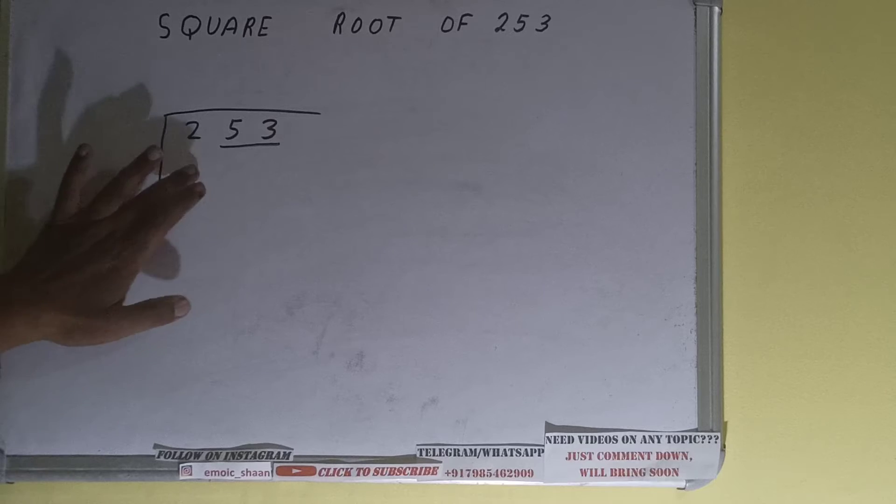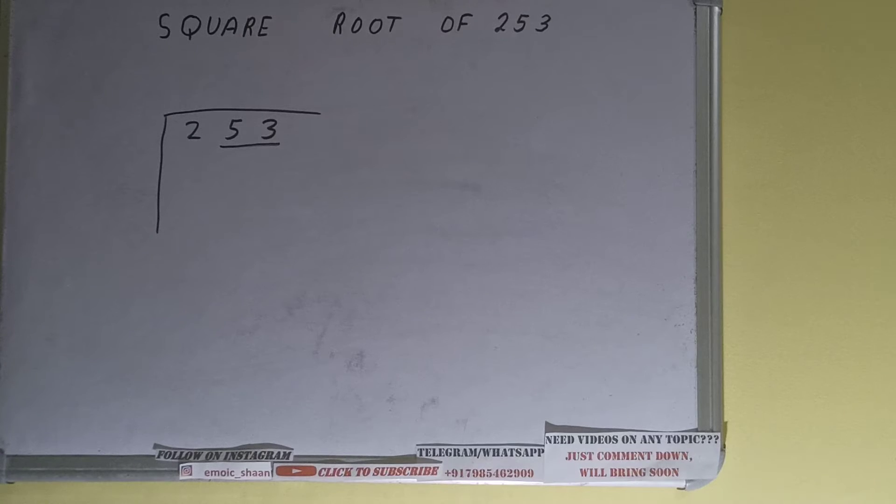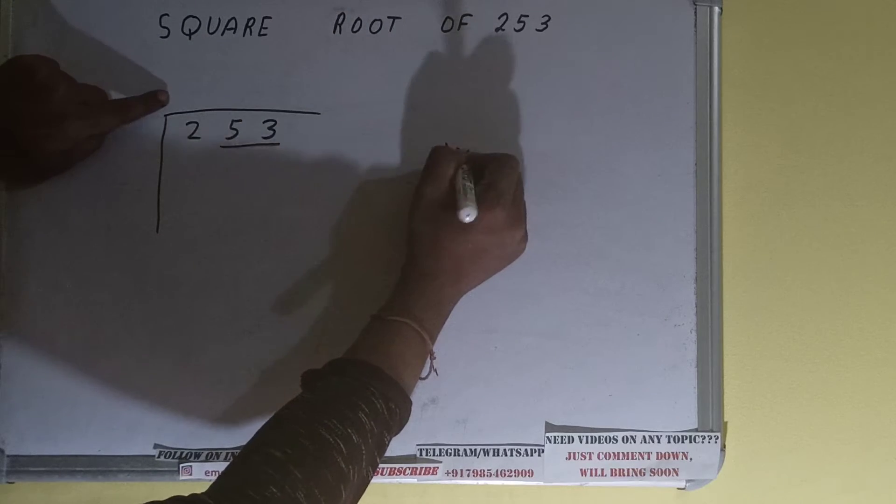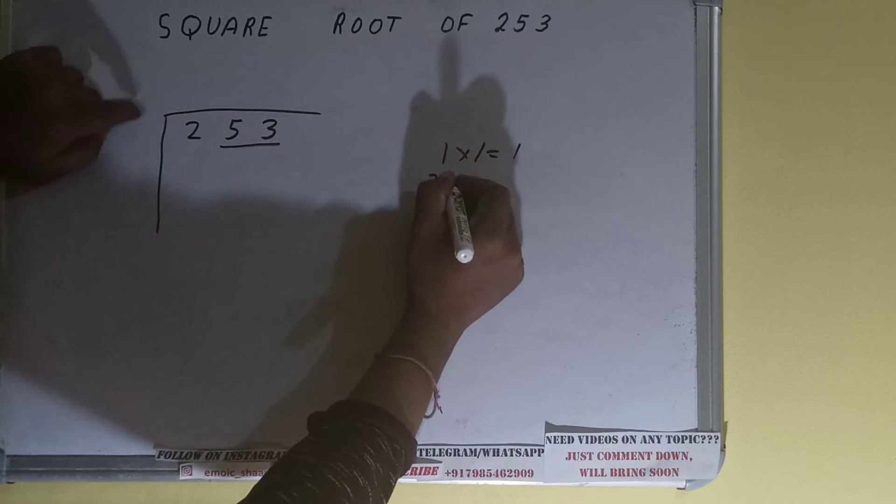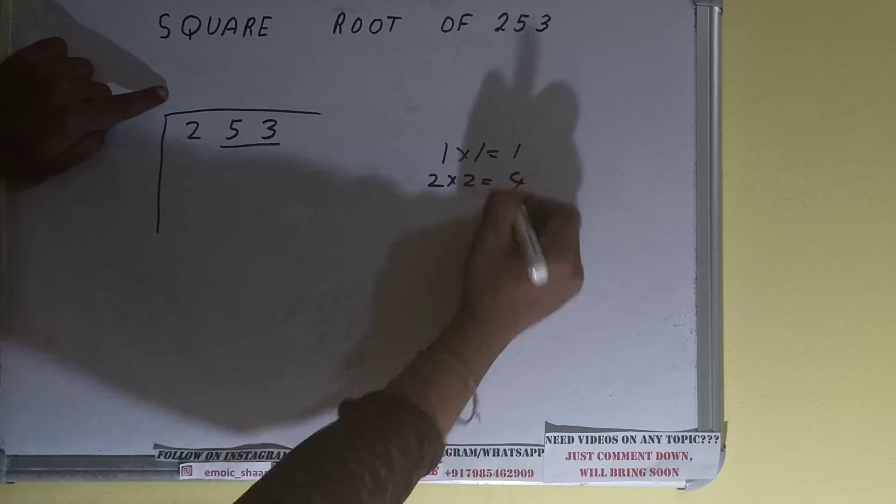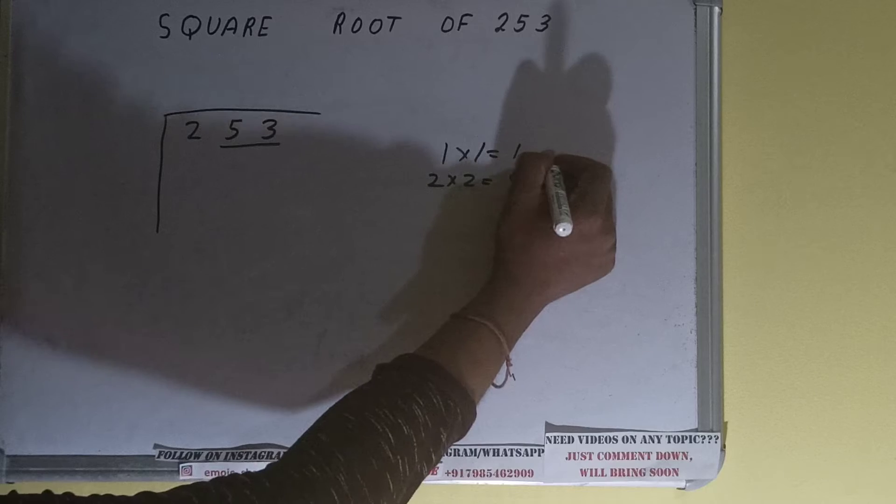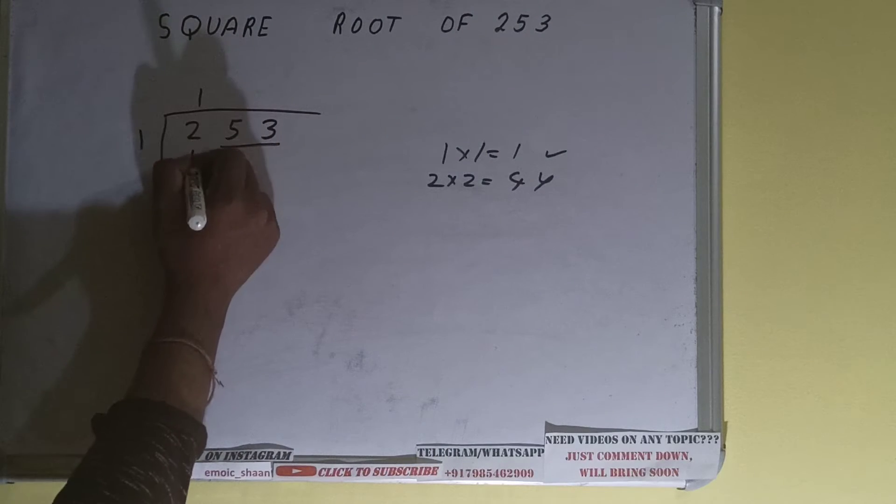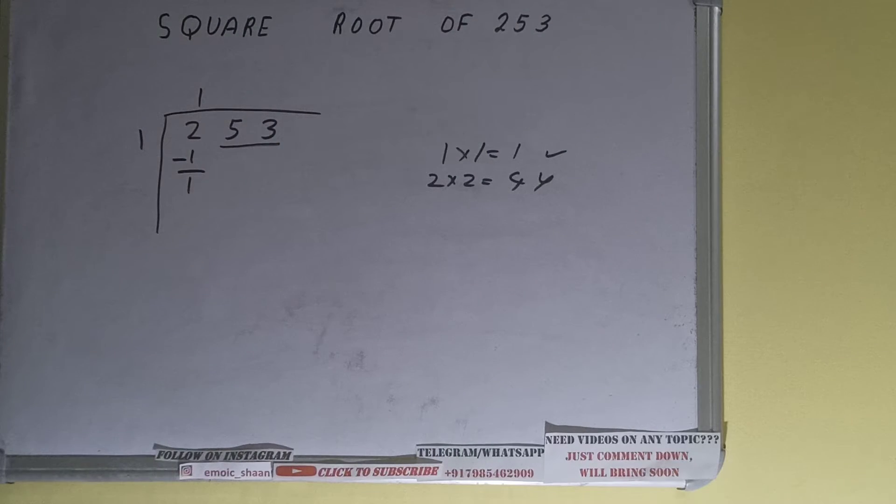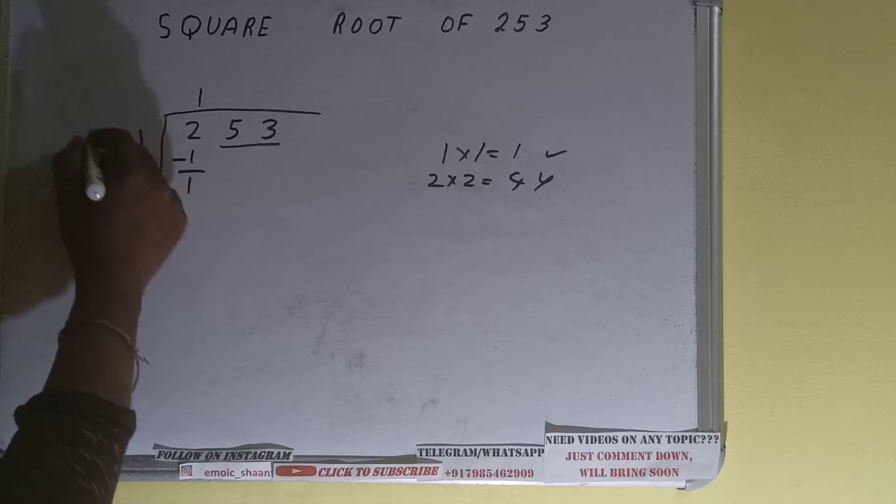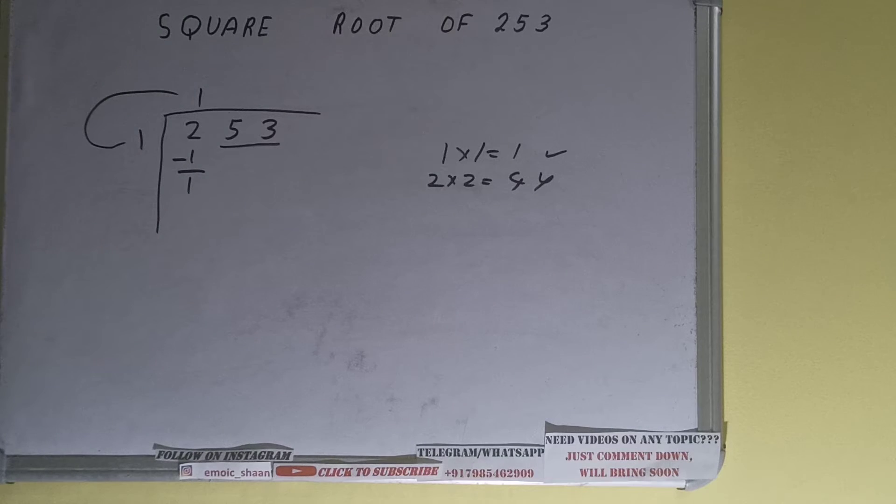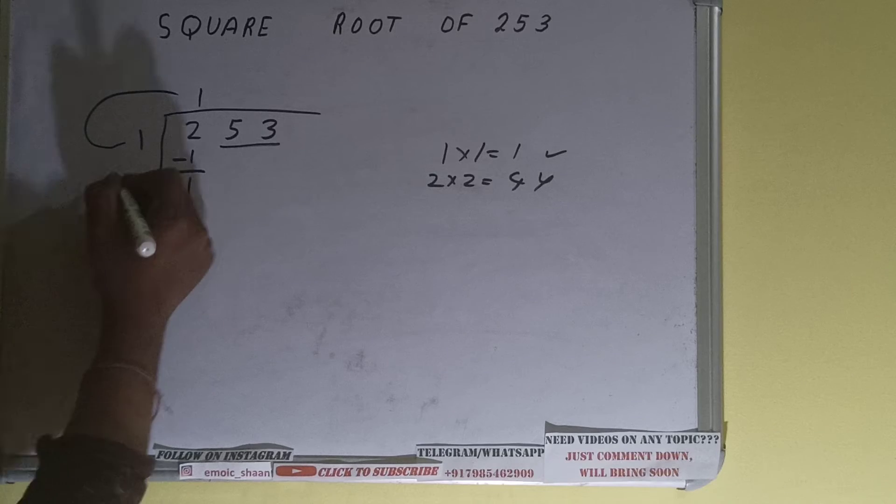First we'll divide this two and then bring down pairs. The rule is whatever number we write here we have to write here also. If we write one here and one here it will give one. If we write two here and two here it will give four. We cannot go with four because four is greater than two, so we have to go with one. One here and one here will give one. Subtract it and we'll be having one. Now whatever is your divisor, that is one, added with what you multiplied with, that is also one. You did one into one, so do one plus one, it will be two.